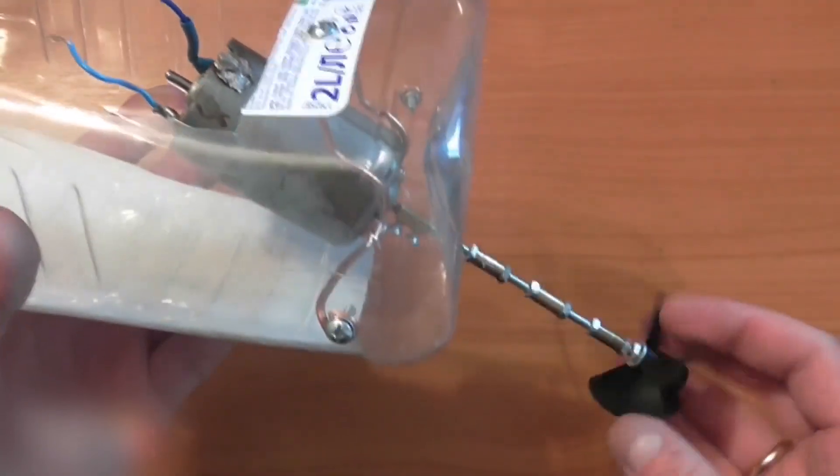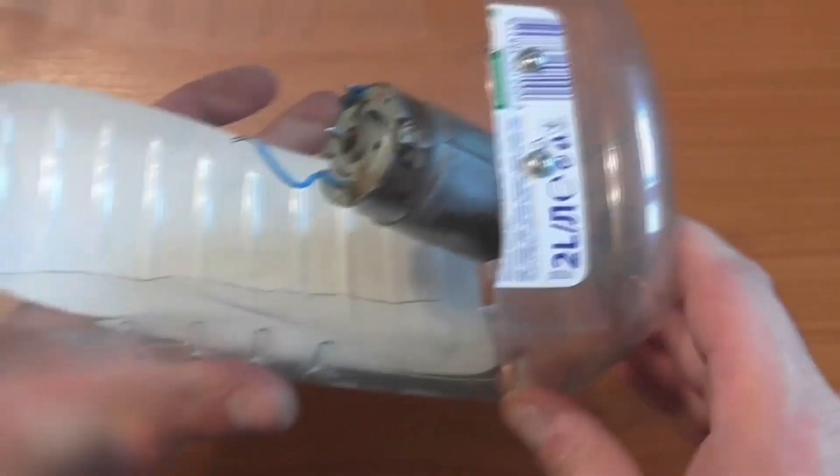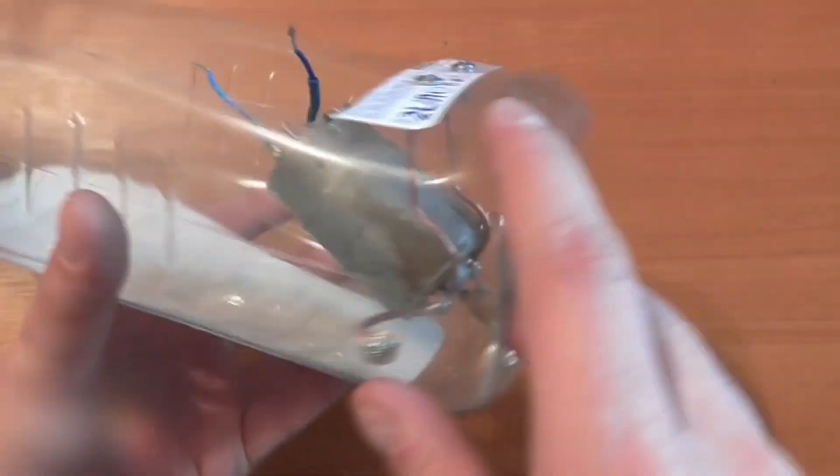Use a copper wire to fasten the motor like this. Use copper wire, not aluminum, because it's too soft for this.